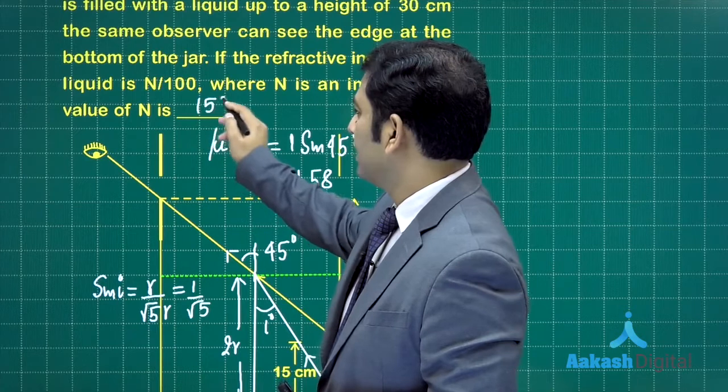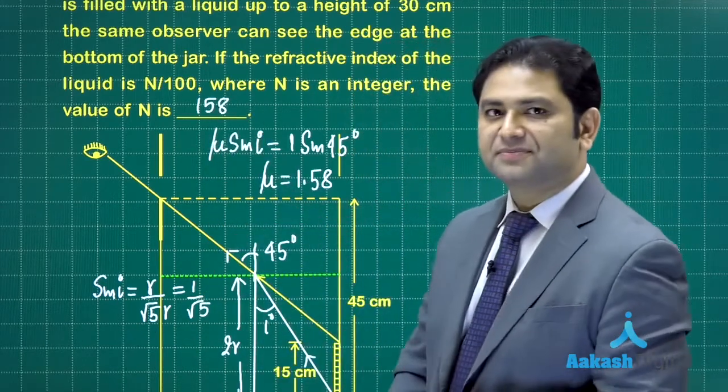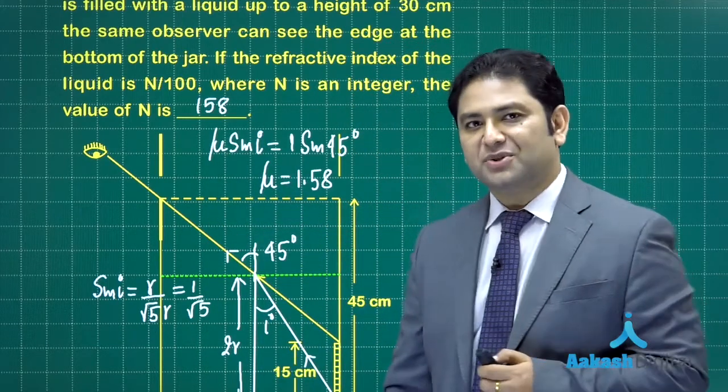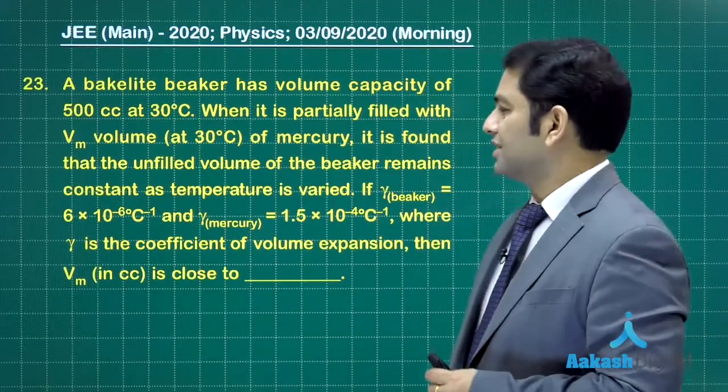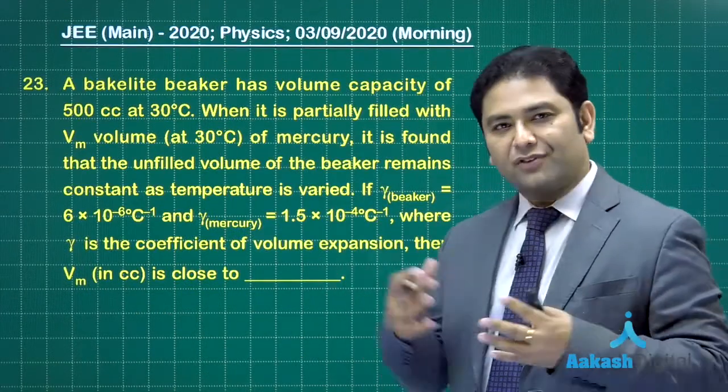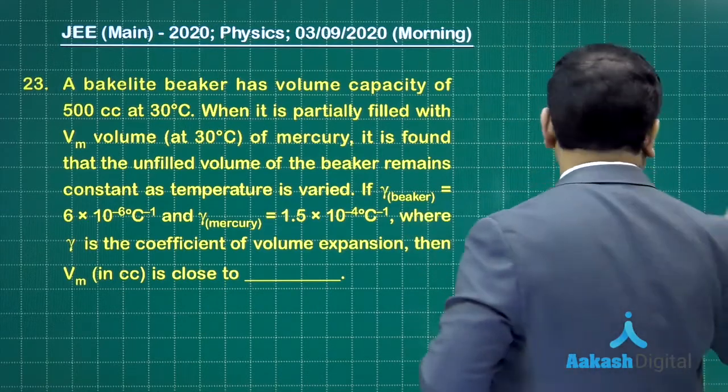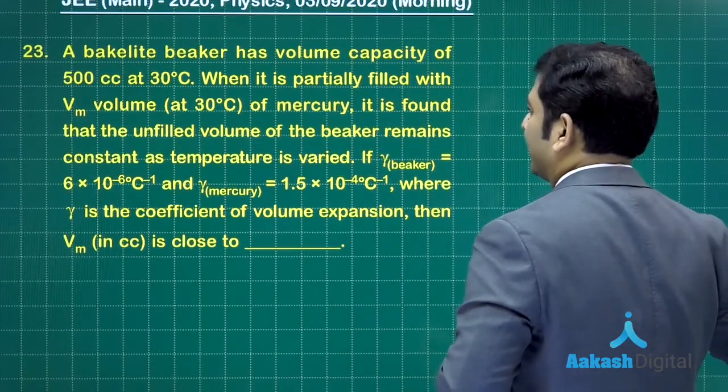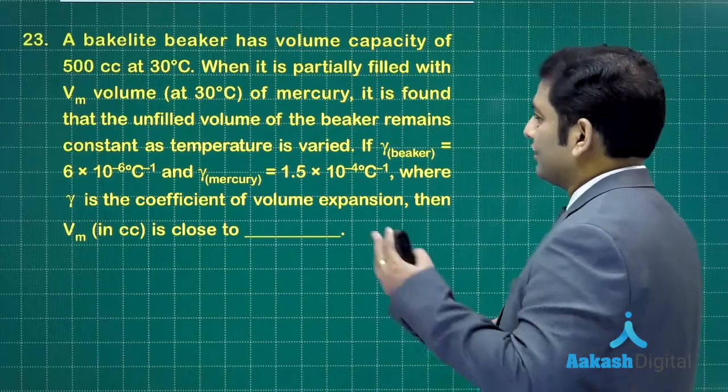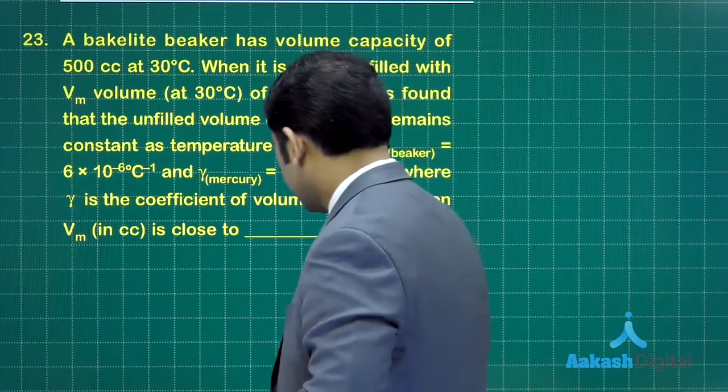Let's go to the next one. The next question, question number 23, is from thermal expansion. Now this story is something like this: there is a bakelite beaker having volume capacity.